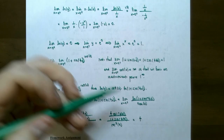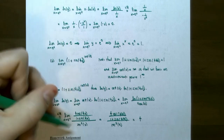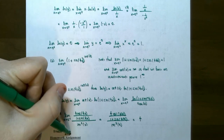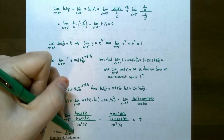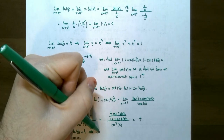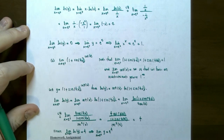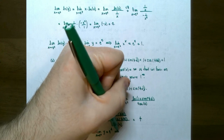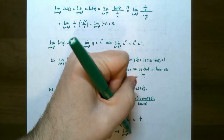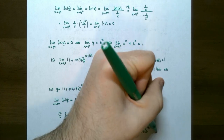Substituting in: 4 times cosine of 4 times 0, divided by 1 plus sine of 4 times 0, divided by secant squared of 0, gives 4. But keep in mind this is not the final limit — we still need to exponentiate. The limit of natural log of y is 4, so the limit as x approaches 0 from the right of y is e to the 4th. Therefore, the limit of 1 plus sine of 4x raised to the cotangent x as x approaches 0 from the right is e to the 4th.